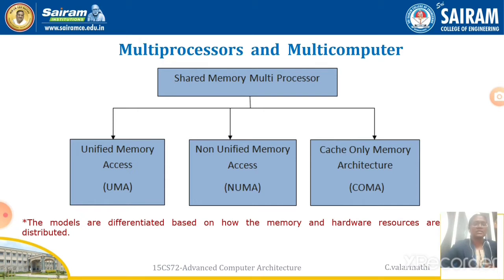Now let us look at multiprocessors in detail. Since multi-processor systems share their memory and hardware resources, we classify shared memory multi-processors into three different architectures: first is Unified Memory Access (UMA), second is Non-Unified Memory Access (NUMA), and third is Cache Only Memory Architecture (COMA).